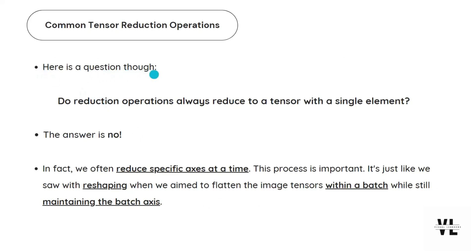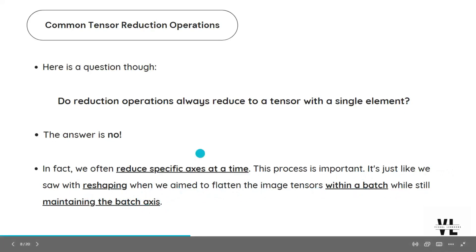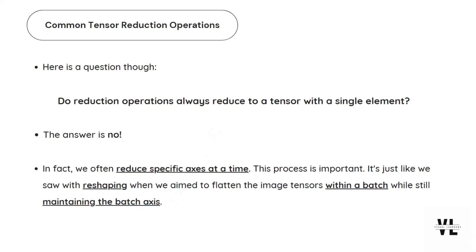Here is a question though: do reduction operations always reduce to a tensor with a single element? The answer is no. In fact, we often reduce specific axes at a time. This process is important — it's just like we saw with reshaping when we aimed to flatten image tensors within a batch while still maintaining the batch axis. If you don't pass any kind of arguments within a reduction operation such as sum or product, then you get a single element. But if you pass the parameter dim, then you can get more than one element as the output.